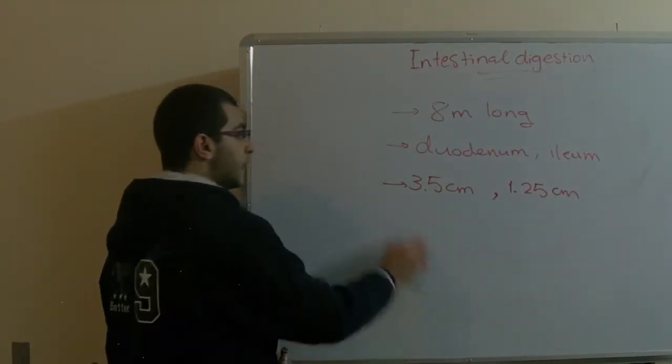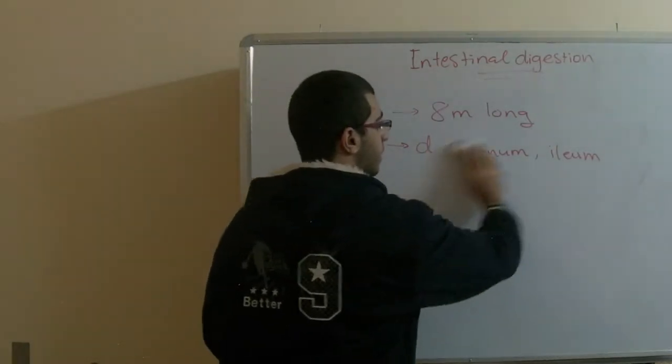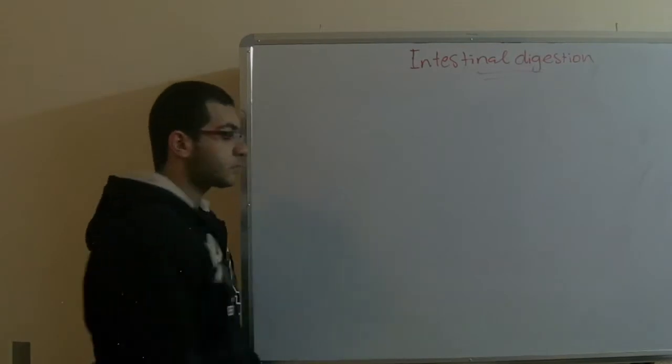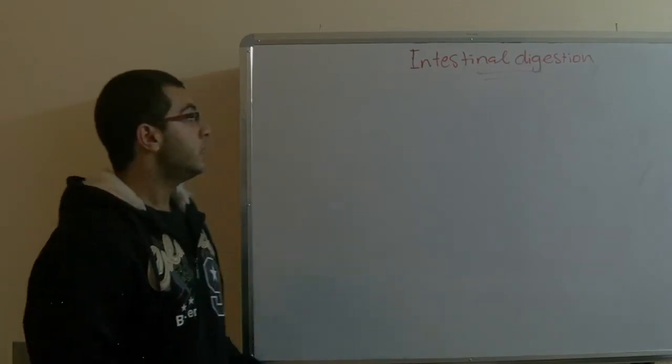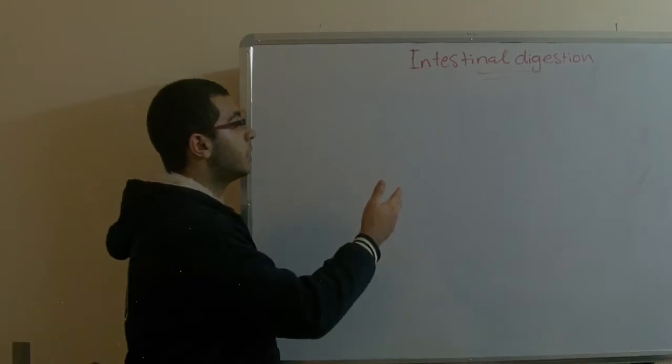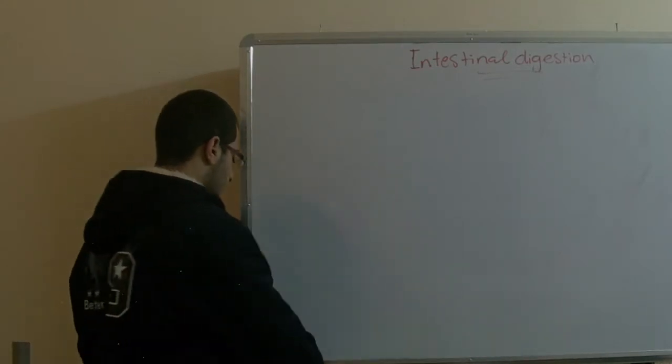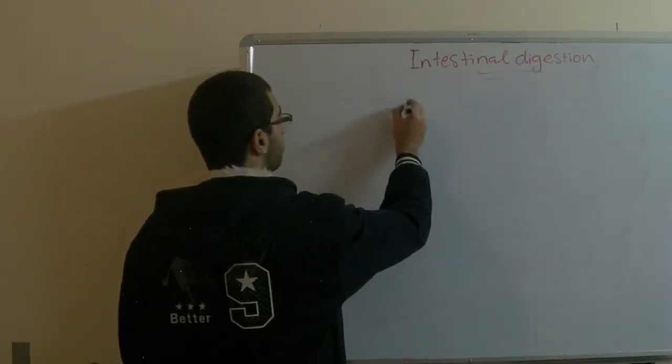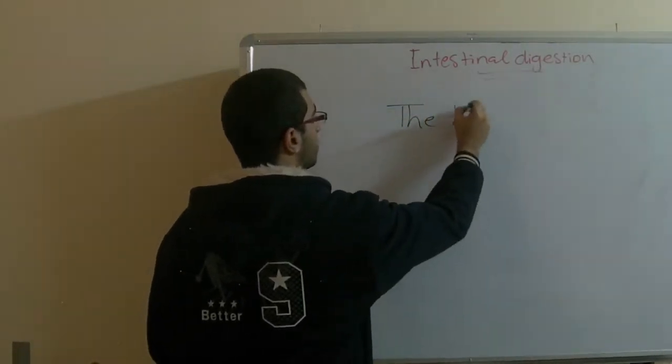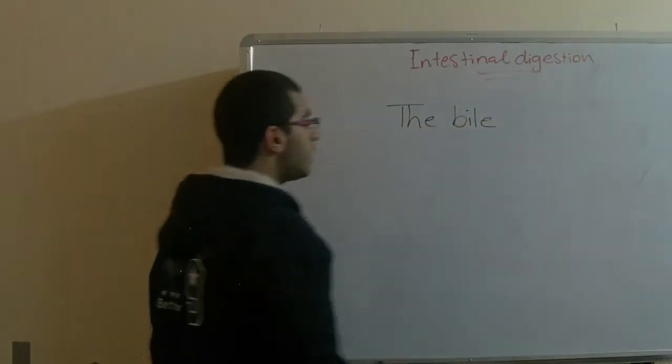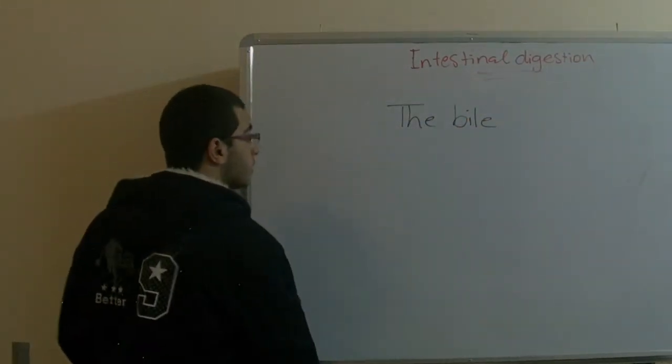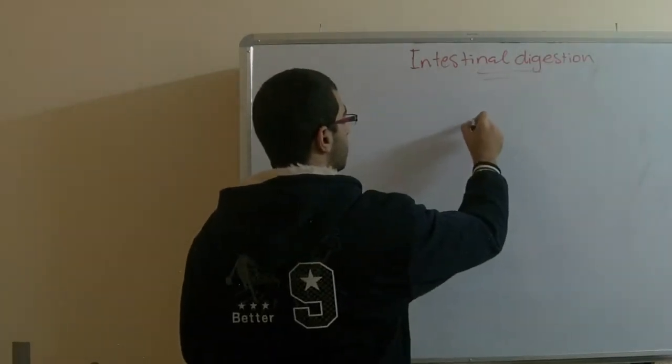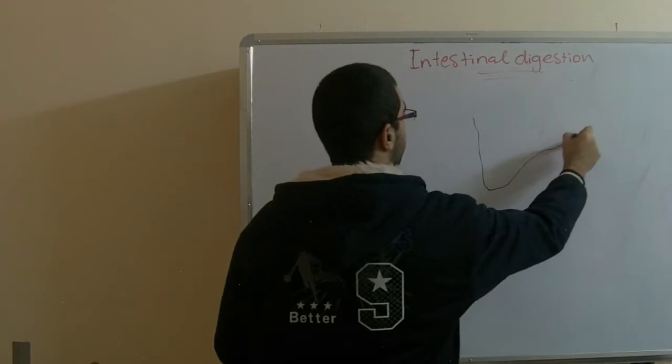As we said in the gastric digestion, there are some secretions such as the hydrochloric acid and the pepsinogen. There are also intestinal juices or secretions. The first thing is the bile. And before talking about the bile, we will draw this to make it more clear.